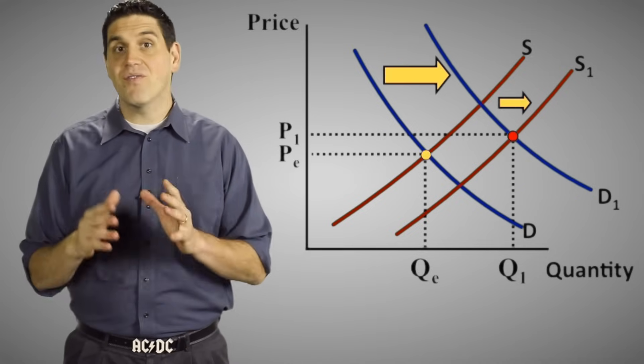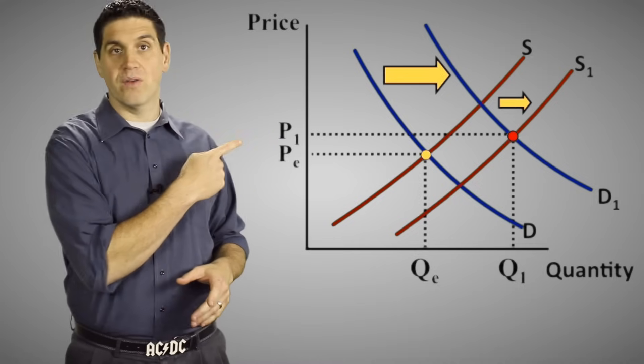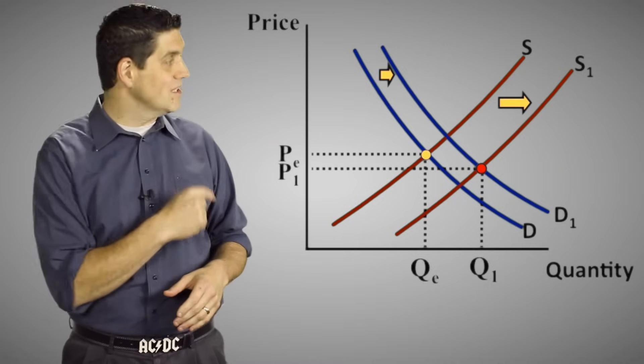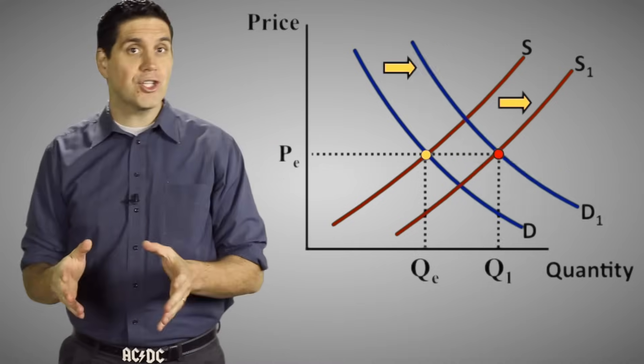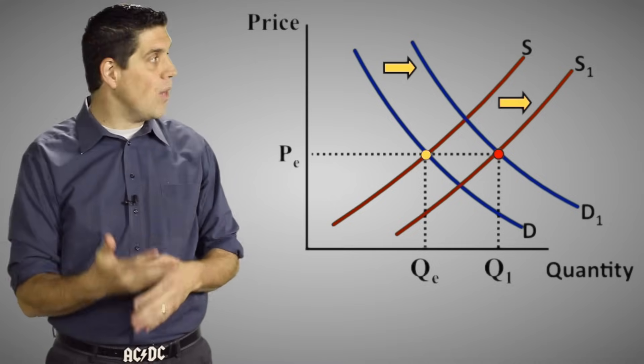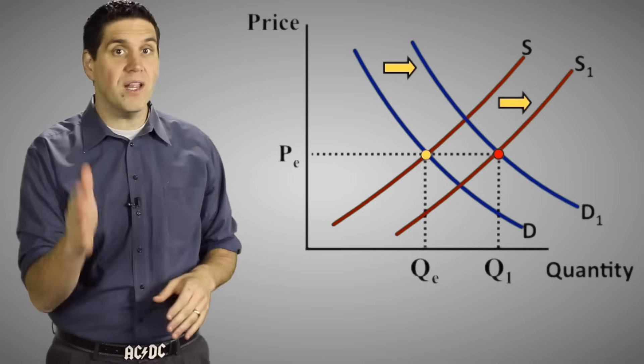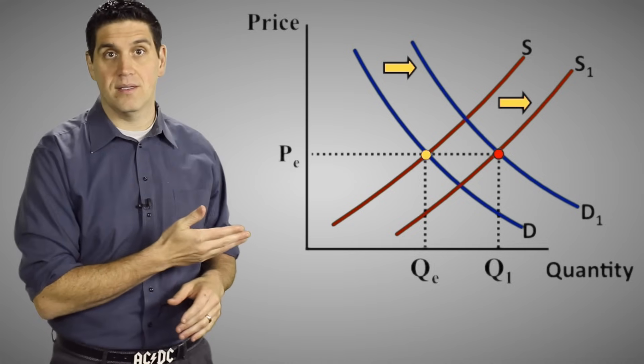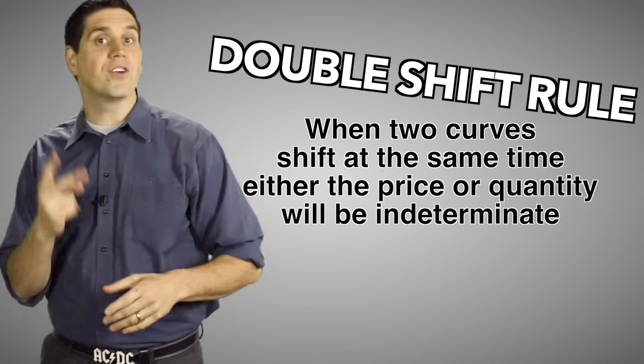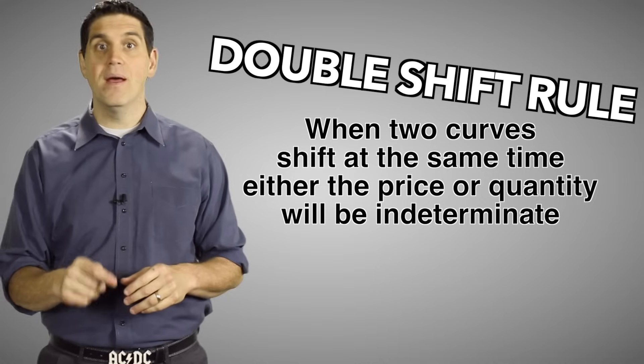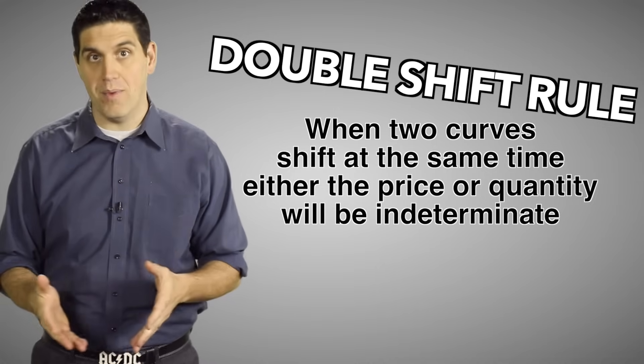If the demand increased a whole lot, then price would have gone up. But if demand increased just a little bit, then the price would have gone down. So actually the price is indeterminate or ambiguous. You can't tell what's going to happen to the price. But you definitely know the quantity is going to increase. And that's the double shift rule. Whenever two curves shift at the same time, either the price or the quantity is going to be indeterminate.